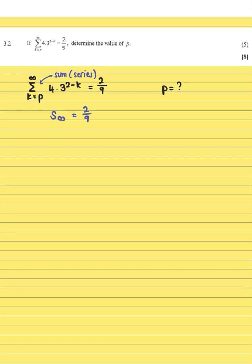Just a reminder, this formula is on the formula sheet. Sum to infinity is a over 1 minus r, and that equals 2 over 9. What they're wanting us to calculate in this question is the value of p.